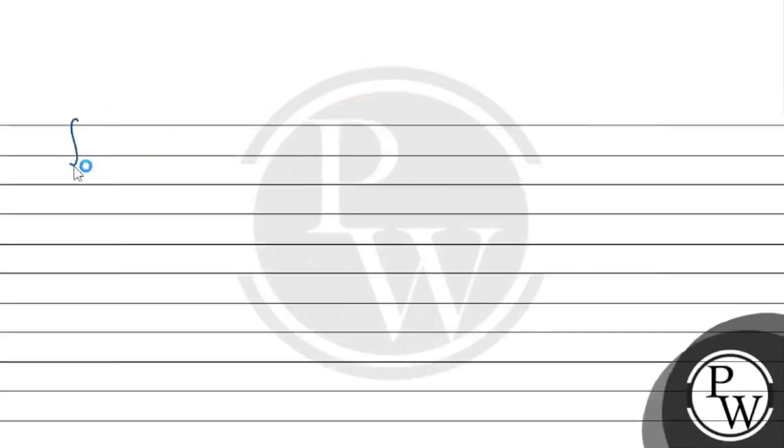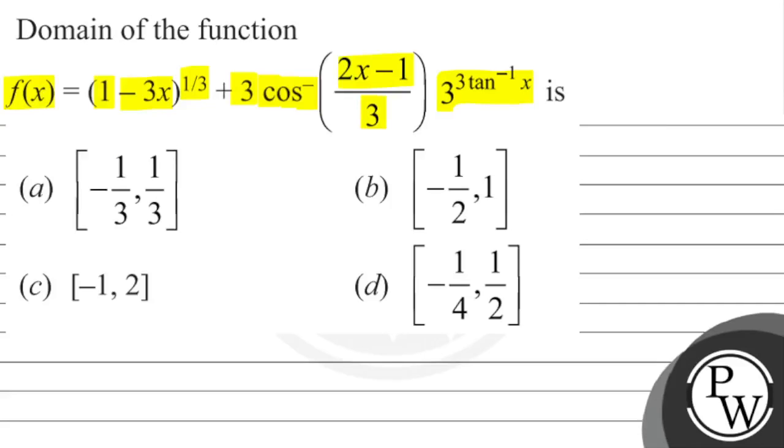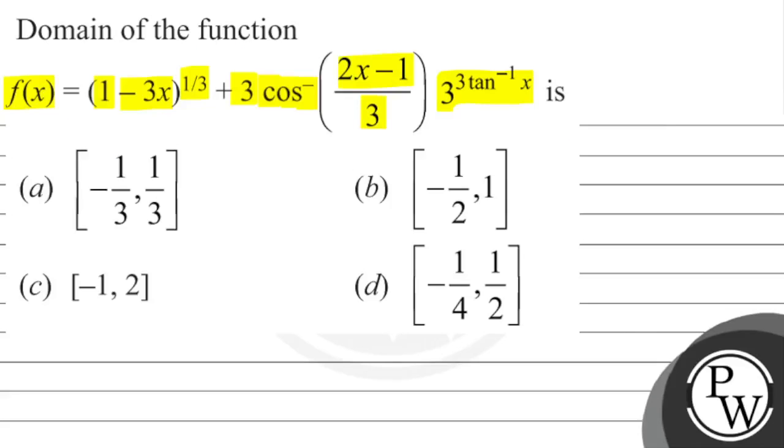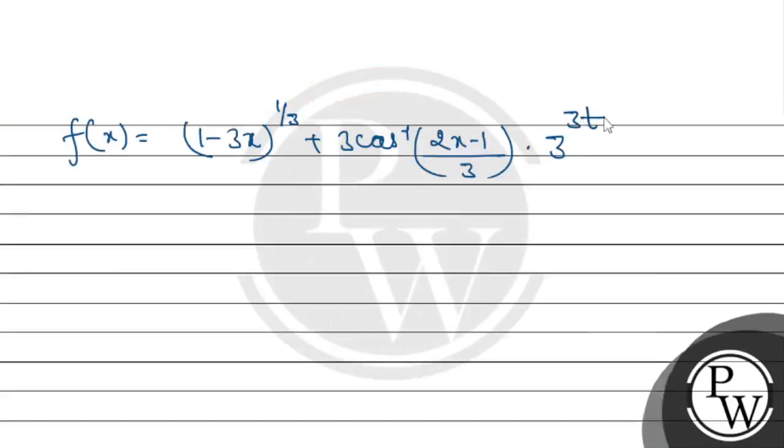So our function f(x) is equal to (1 - 3x)^(1/3) plus 3 times cos inverse (2x - 1)/3 into 3^(3 tan inverse x). So we will write it now.